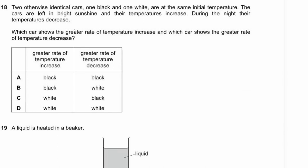Question 18. Two otherwise identical cars — one black, one white — start at the same temperature, left in bright sunshine, then cooled at night. Black is the best absorber but also the best emitter. During the day the black car gets hotter faster; at night it gets colder faster. Answer A.